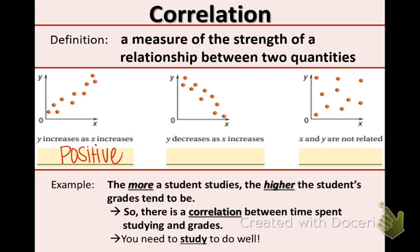The next one, as x increases, y decreases. You can see that the scatter plot or the points are going down. So that means we're going to have a negative correlation, just like a negative slope slants down as well.